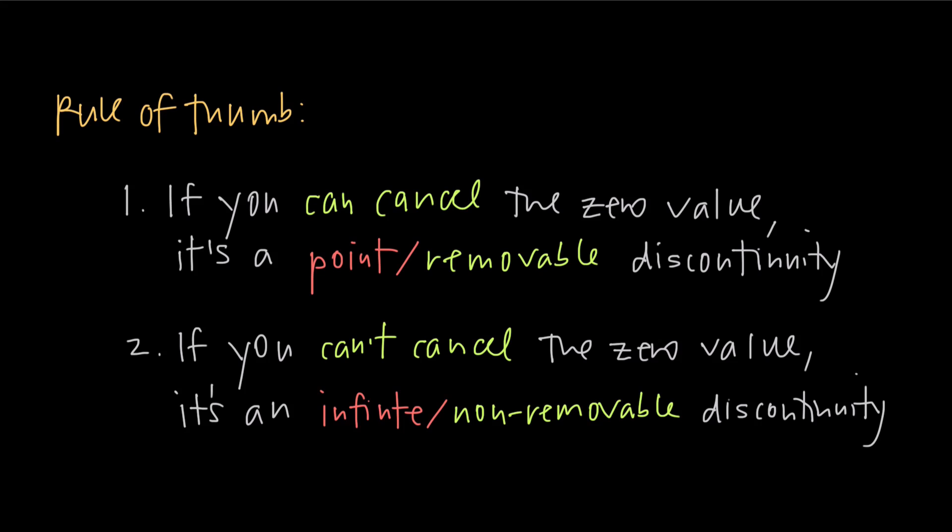If the 0 value can be cancelled out of the denominator, then it's a point discontinuity. If it can't be cancelled out, then it's an infinite discontinuity.